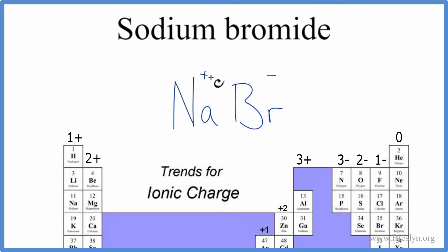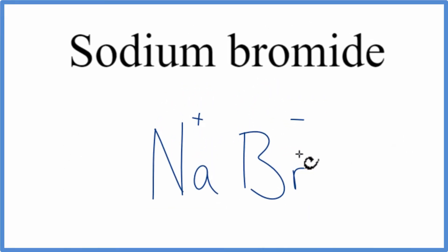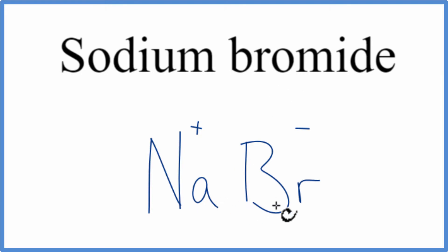For ionic compounds, these charges need to add up to zero. They need to balance out and give a net charge of zero. With sodium bromide, the Na and the Br balance out, so we're done.